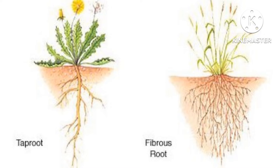Taproot — a taproot has a main root that grows at the end of the stem. Small roots grow from this single thick root. Plants like bean, mustard, carrot, and others have tap roots.